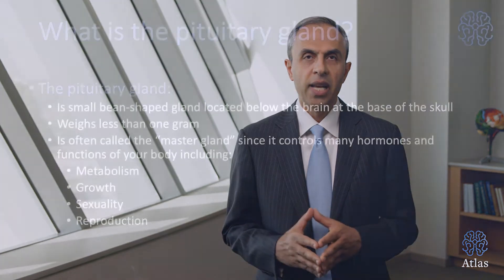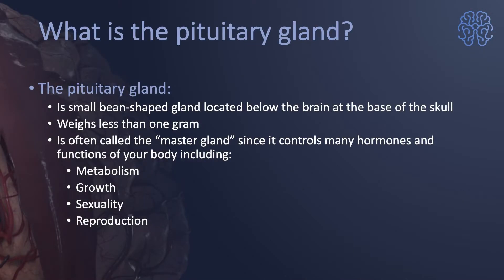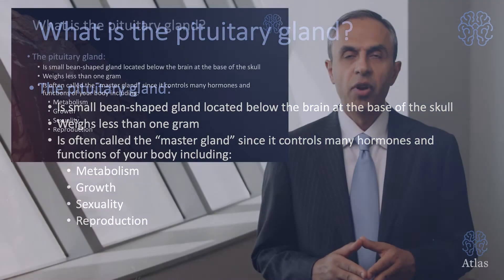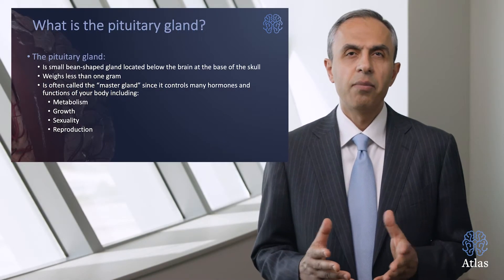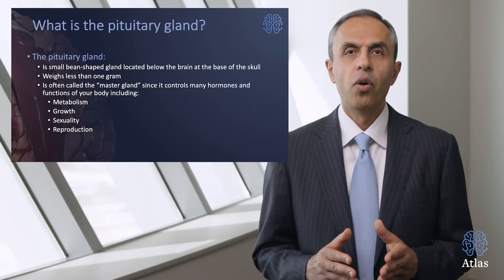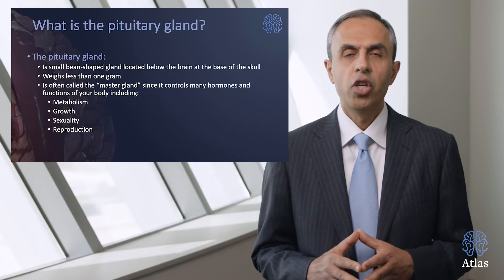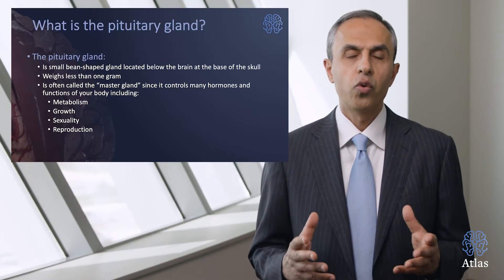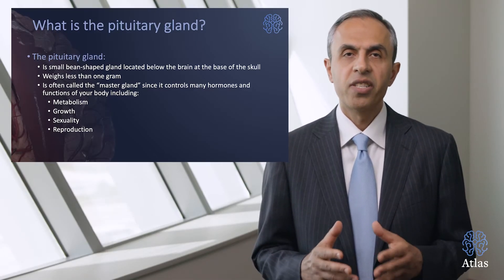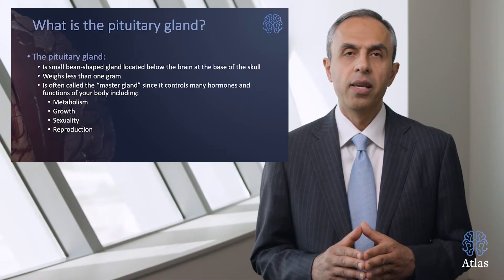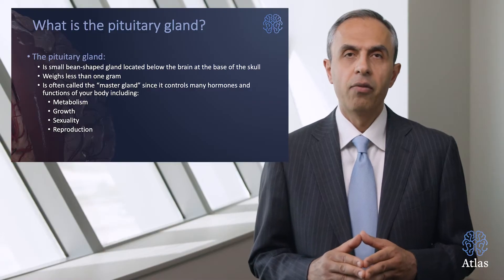Let's start with the definition of a pituitary gland. The normal gland is a small bean-shaped gland located below the brain at the level of the skull base. It weighs less than about a gram. It's often called the master gland since it controls the most important functions of your body, including metabolism, growth, sexuality, and reproduction.